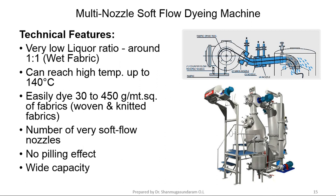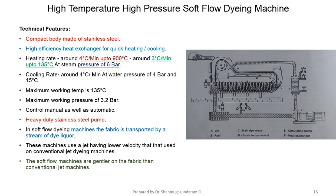At the end of the dyeing process, there is no pilling effect and the machine has wide capacity. For high temperature, high pressure soft flow dyeing machine: the body is compact and made of stainless steel, equipped with a high efficiency heat exchanger for quick heating and cooling. Heating rate is either 4 degrees Celsius per minute or 3 degrees Celsius per minute. Pressure can be maintained at 6 bar. A heavy duty stainless steel pump is fitted. In soft flow dyeing machine, the fabric is transported by a stream of dye liquor, and the soft flow machines are gentler on the fabric than conventional jet machines.